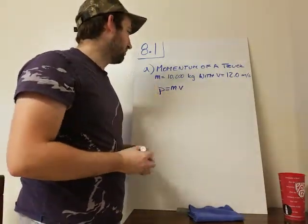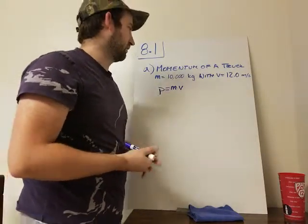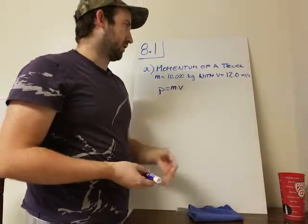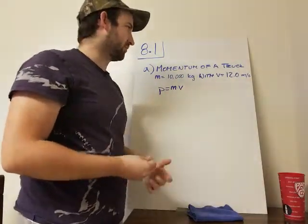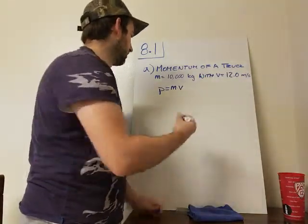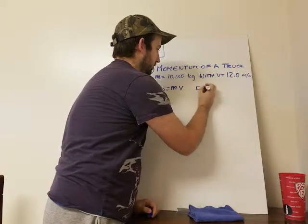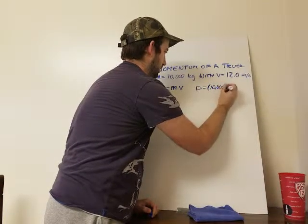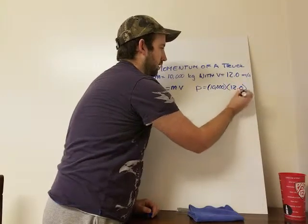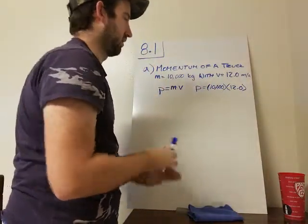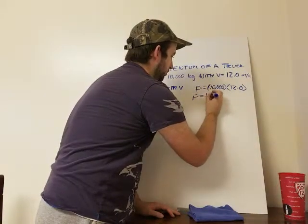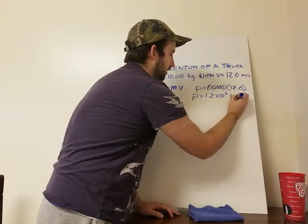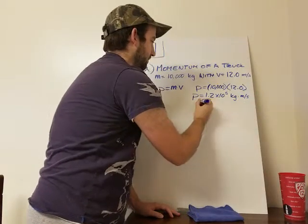So the first part wants to know the momentum of a truck when the mass is 10,000 kilograms and the velocity is 12 meters per second. We'll need to use our momentum equation and this is really straightforward. We're given both the variables that we need, so all we do is plug them in. We'll end up with the momentum P equals 10,000 times 12. If we put that in our calculator, we end up with P equaling 1.2 times 10 to the fifth kilograms times meters per second. So that's it for part A.